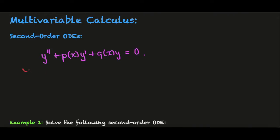These are linear, which means that the highest power of y is one. There's no y in these coefficient functions, only derivatives of y. This means that the solutions of the ODE form a vector space.